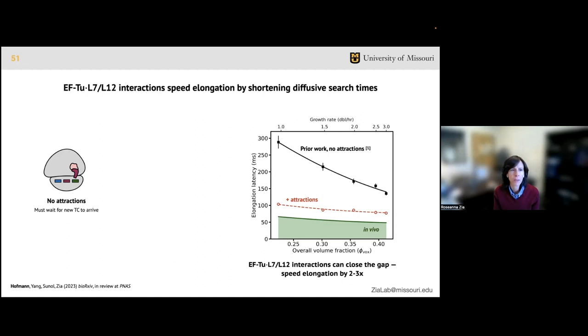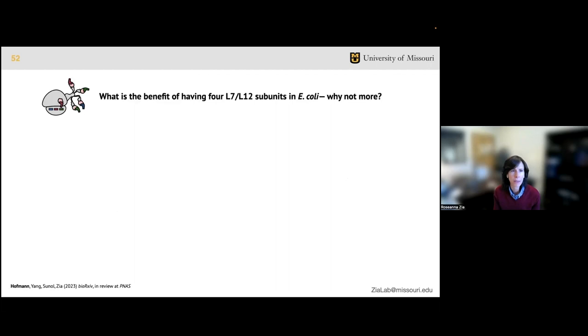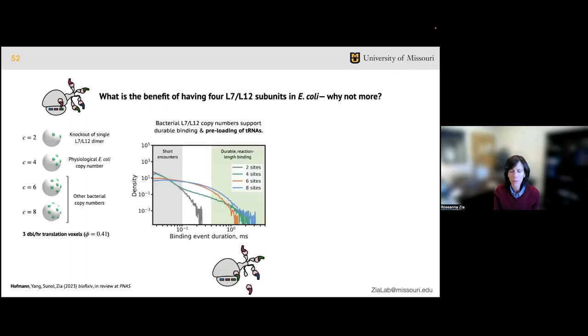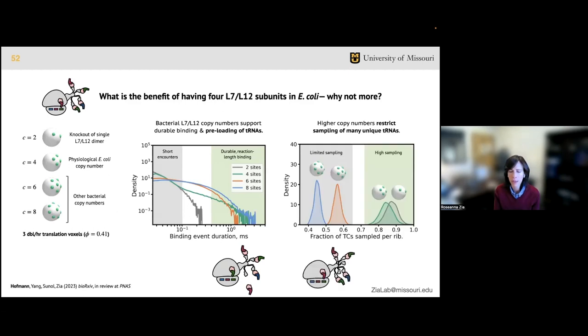When we include limited valency attractions between ternary complexes and ribosomes, we find that elongation is sped up two to threefold relative to the baseline non-attractive simulations shown in black. The absolute latency is now in much better agreement with experiments, and our predicted speed-up with growth rate quantitatively recovers the in vivo trend. We were pretty pleased with that. These attractions speed elongation by facilitating colloidal scale transport. In the case without attractions, a ribosome that finishes testing and rejecting a non-matching tRNA must wait for the next tRNA to arrive to continue the process. However, when ternary complexes are preloaded onto the L12 subunit, a pool of new tRNA are nearby and can almost immediately be tested, thereby shortening wait times and speeding elongation. Now we're getting closer to this combinatoric miracle.